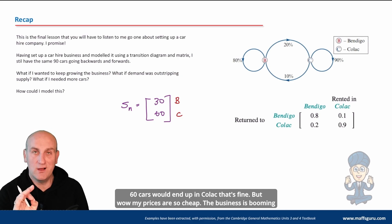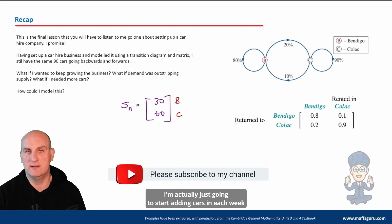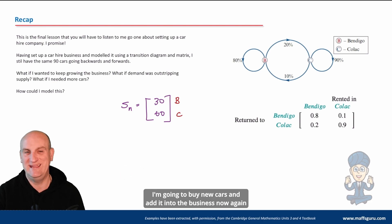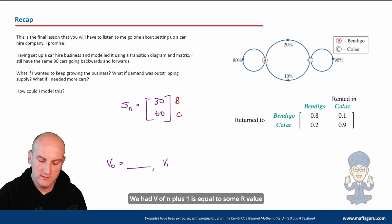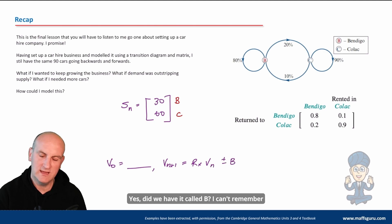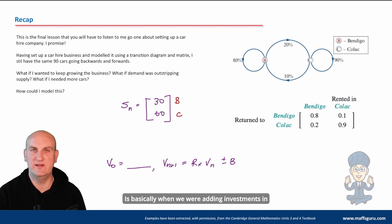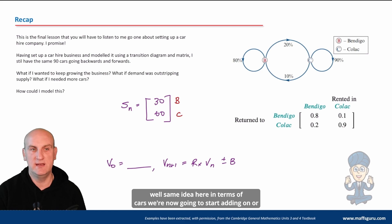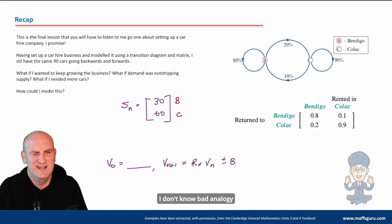So the steady state solution said 30 cars would end up in Bendigo and 60 in Colac. But now my prices are so cheap the business is booming — I want to expand. I'm going to start adding cars in each week; I'll buy new cars and add them into the business. Going back to financial maths, we had v of n plus one equals r times v of n plus or minus b, where b was money being added into the investment each period. Same idea here with cars.